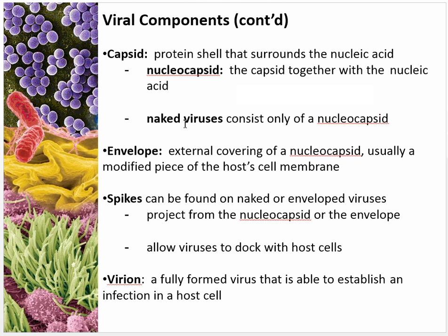Some viruses are called naked — they do not have any cell membrane outside of that capsid. Enveloped viruses have a capsid and a remnant of cell membrane that they got from their host. Viruses must have spike proteins on the outside, which allow them to adhere to their host cells. The term virion refers to the entire assembled virus, including the capsid, spikes, genetic material, and if it's an enveloped virus, the cell membrane piece as well.